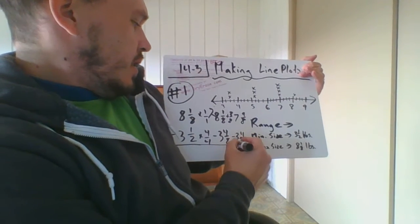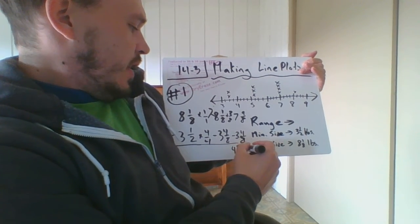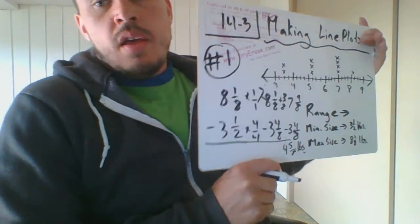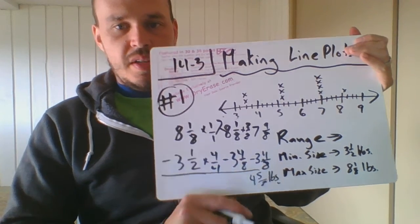And when you do that, you're going to get a total of the range is four and five eighths pounds. So the pumpkins are about four pounds apart. That's what the range means if that pops up.